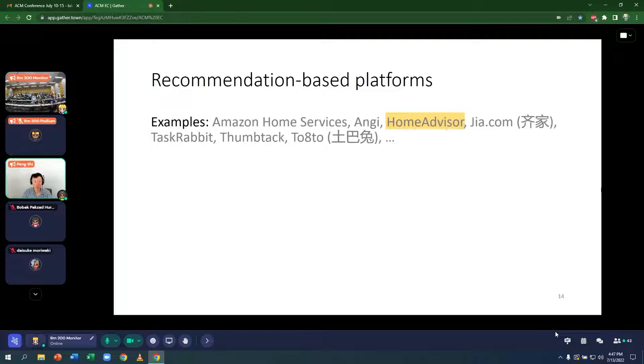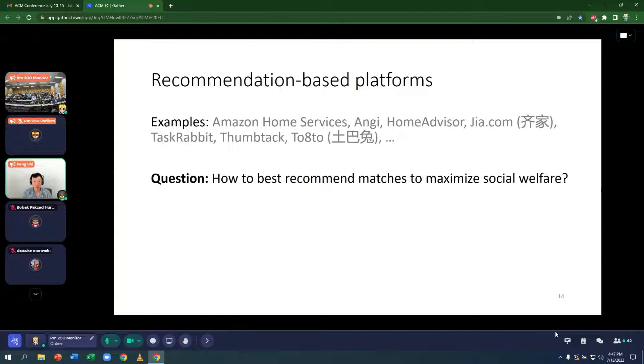All of these recommendation-based platforms work in a similar way. Customers fill out some questionnaires about what they're looking for. And the platform connects them with a limited number of suitable providers. The research question is, for these platforms, how to best recommend matches to maximize social welfare? If I'm Home Advisor, I want to recommend four kitchen remodelers, which four to recommend.